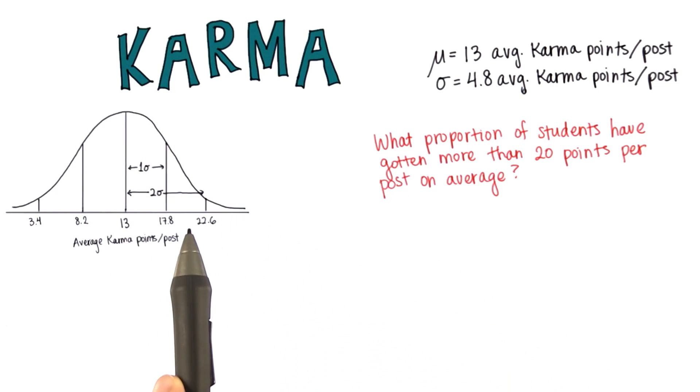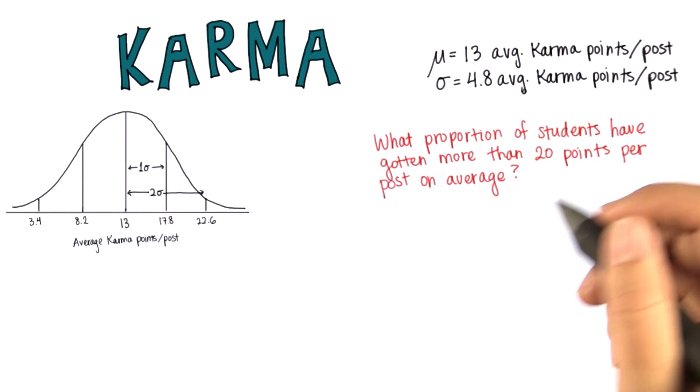Just like we did last time, let's find where 20 falls on this distribution. It's here between 7.8, one standard deviation away from the mean, and 22.6. So the z-score will be somewhere between 1 and 2. Let's find out what it is exactly.